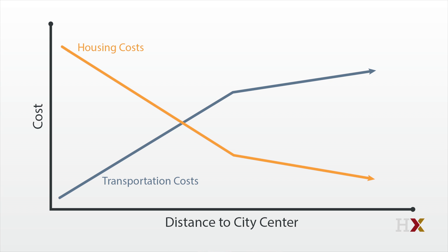Prices are higher closer to the city center than on the edge. Of course, there's a lot that's wrong with the model — people don't commute to one place, and people care about locations for reasons other than commute time. But as a starting point, the Alonzo-Muth-Mills model is simple, and it does pretty well with a lot of the data.